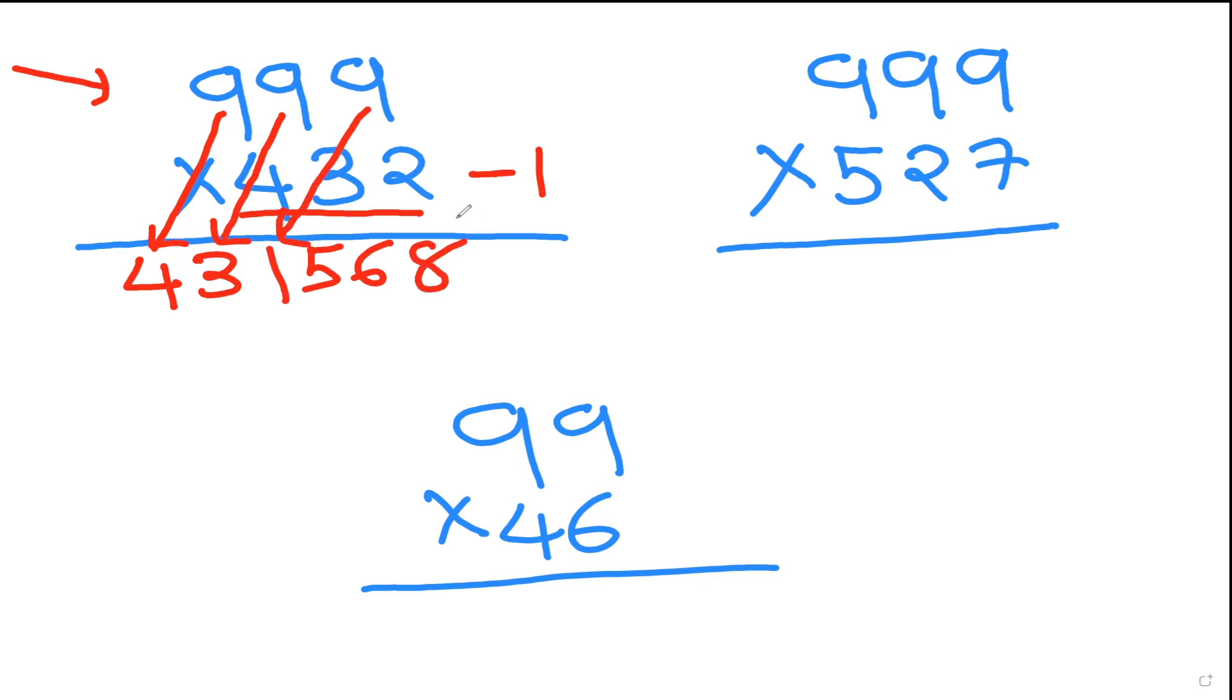So 999 times 432 is 431,568. If you don't believe me, put it in a calculator. I believe you got the technique now, isn't it?